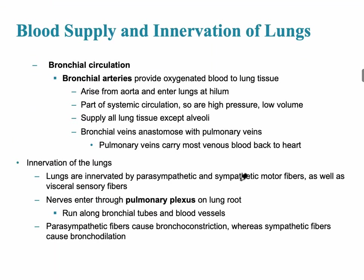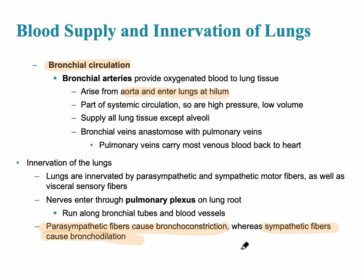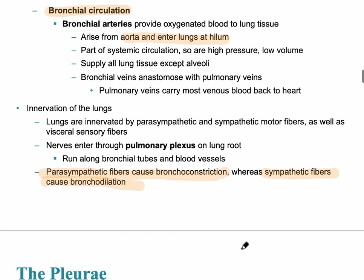The second circulation is the bronchial circulation, because the bronchi and lung tissue need to receive oxygen as well. The bronchial arteries arise from the aorta and enter the lungs at the hilum. Regarding innervation, parasympathetic fibers cause bronchoconstriction via acetylcholine from the vagus nerve. Sympathetic fibers cause bronchodilation via epinephrine — an EpiPen causes bronchodilation, so somebody having an allergic attack can then breathe.